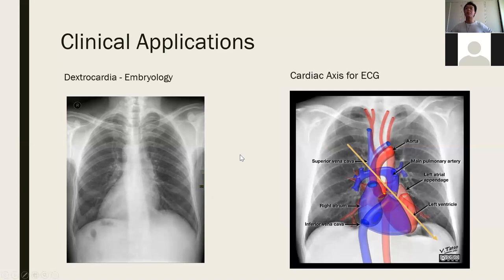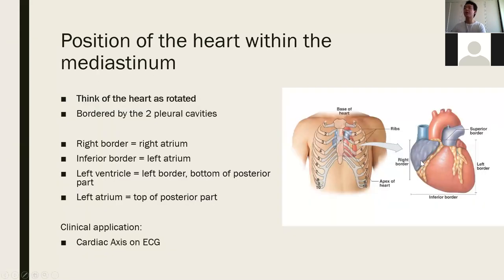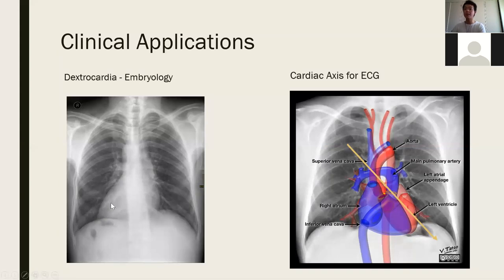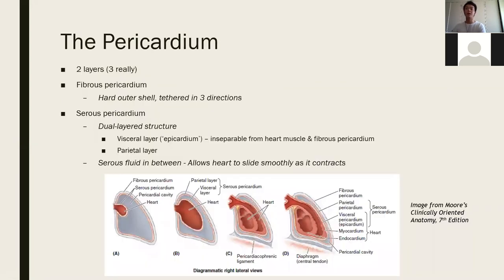Dextrocardia occurs when the heart is flipped — it's on the right side of the body and oriented towards the right, instead of the normal left-sided orientation. The cardiac axis of the ECG is based around how the heart is rotated in the mediastinum.